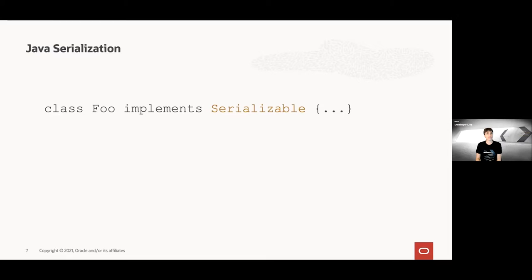With Java serialization, to be able to serialize an object, its class has to implement Serializable — a marker interface with no behavior or state. With this, a little Foo class is now serializable. This kind of seems too easy. And in fact, the flaws of Java serialization are well-known and many.